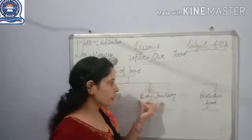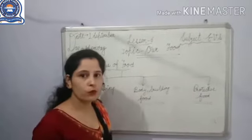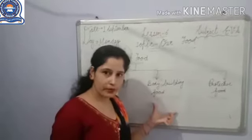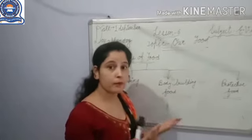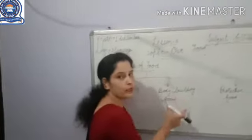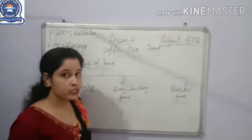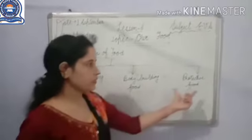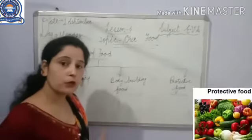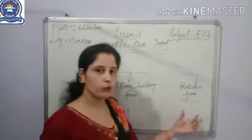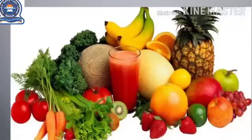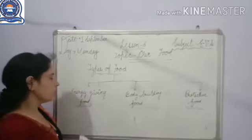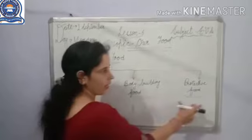Next, we are talking about body-building food — the food that helps us to make our body. And fruits and vegetables are examples of protective food. So students, there are three types of food: energy-giving food, body-building food, and protective food.